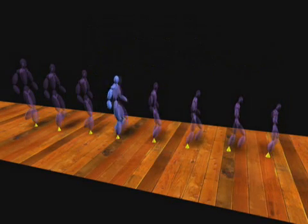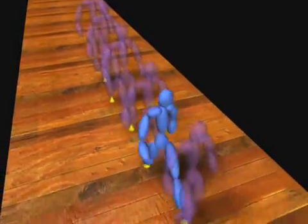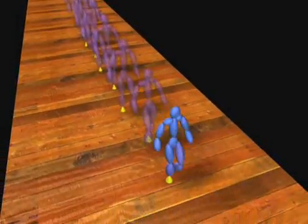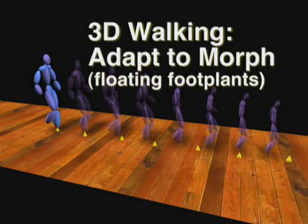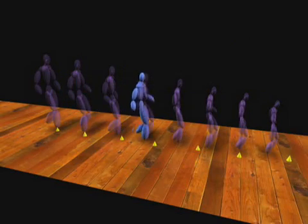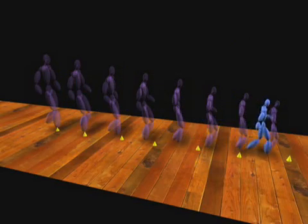The same methods can adapt a motion to a character whose size is changing. In this example, we allow the solver to reposition the foot plants to create more natural stride lengths.